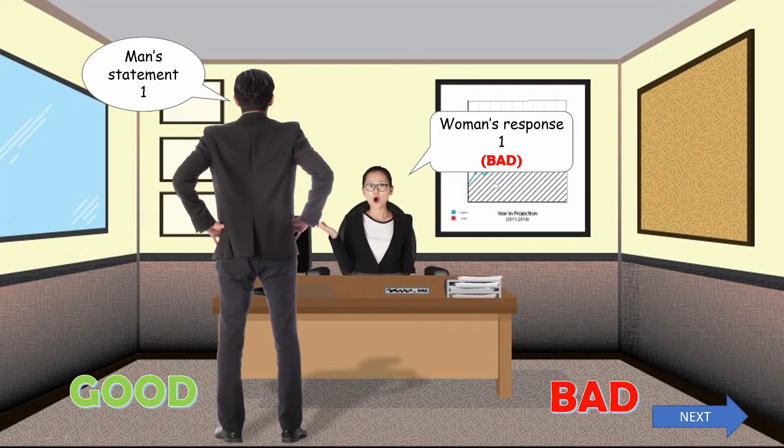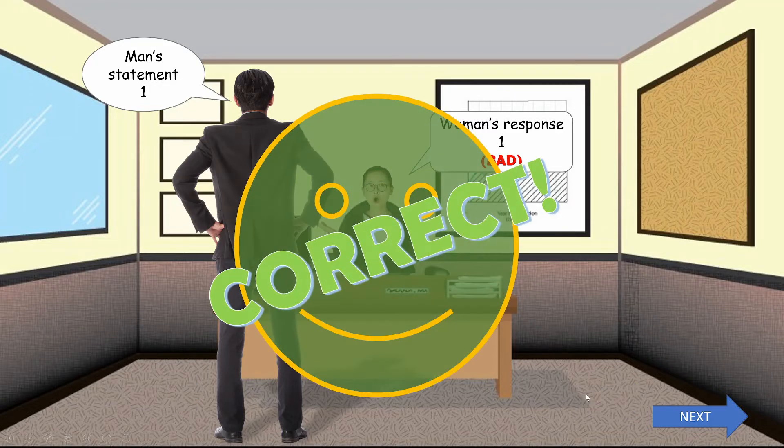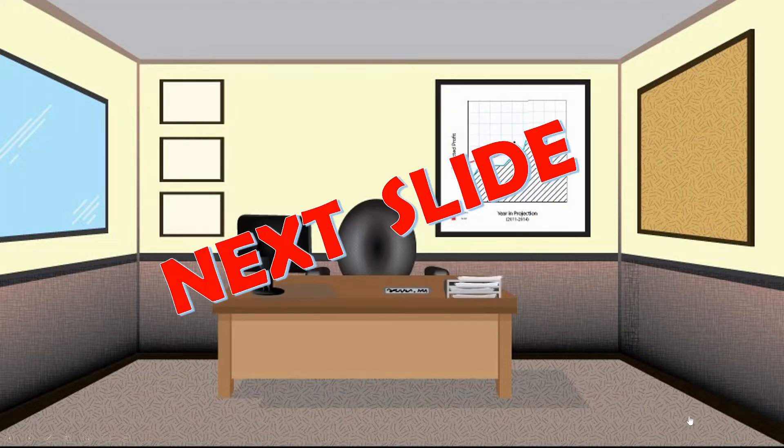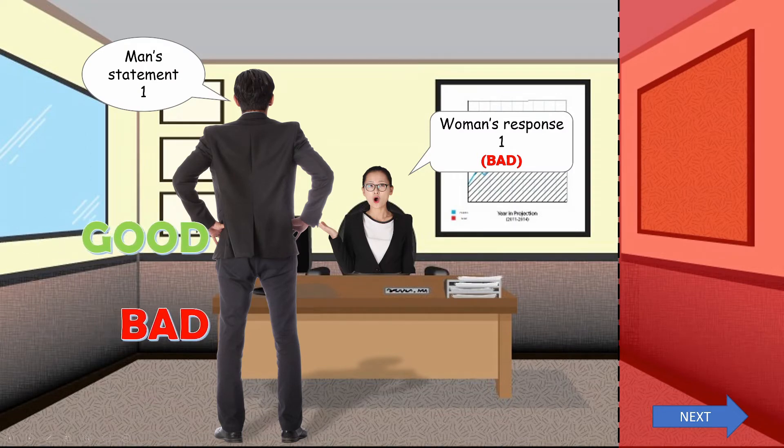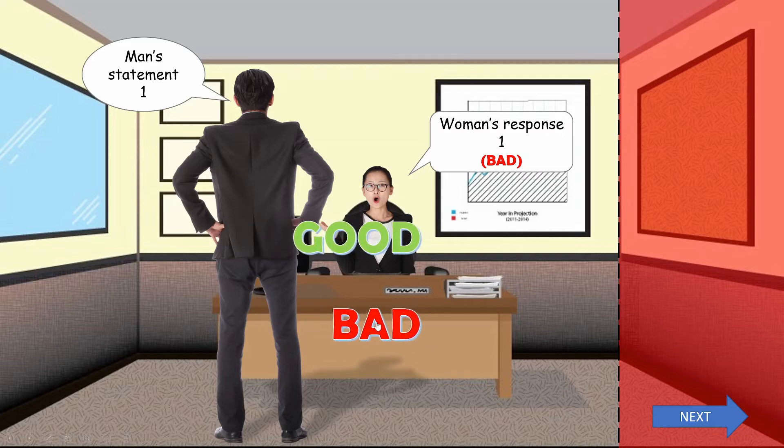Now we can see the similar actions that happen when the students answer correctly. Now here's a slightly different approach where the good and bad words are animated to move across the screen. The students must answer before the words reach the red safe zone.